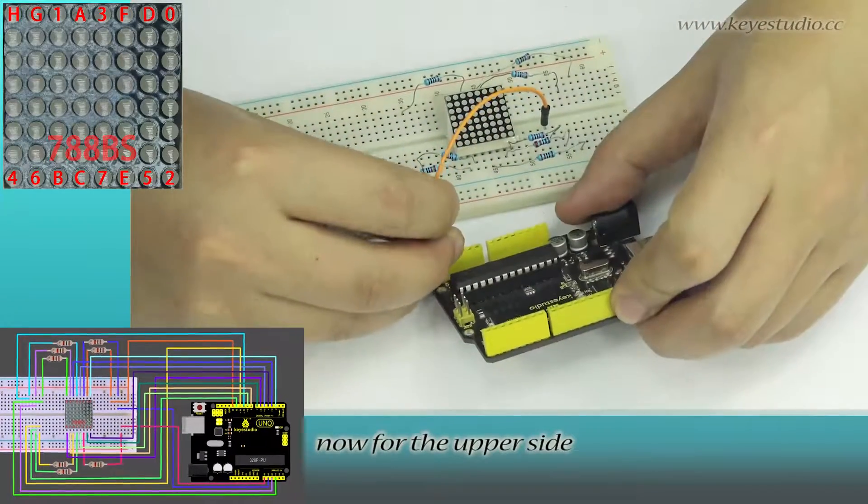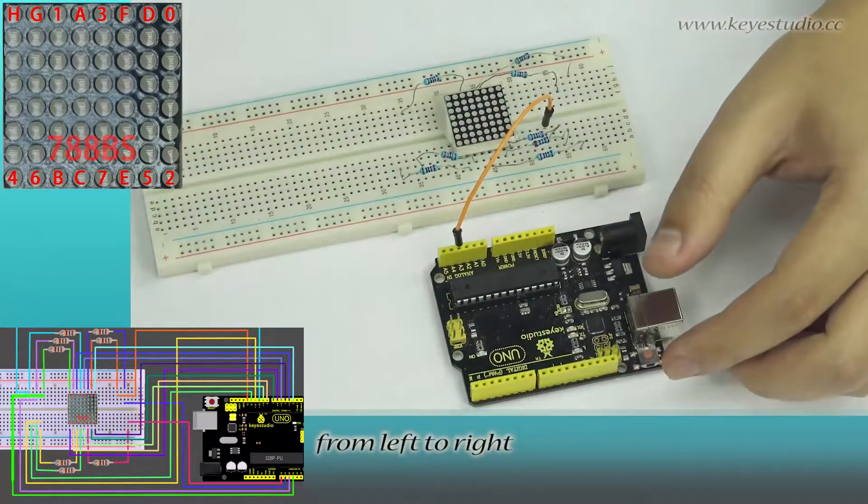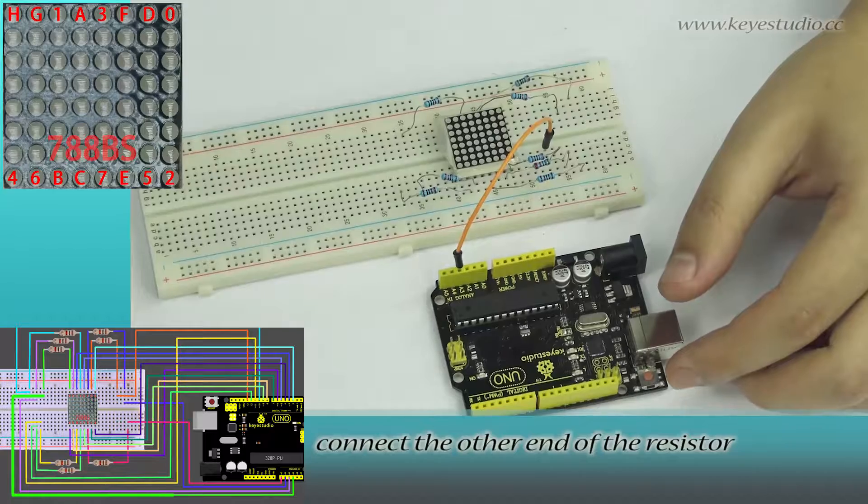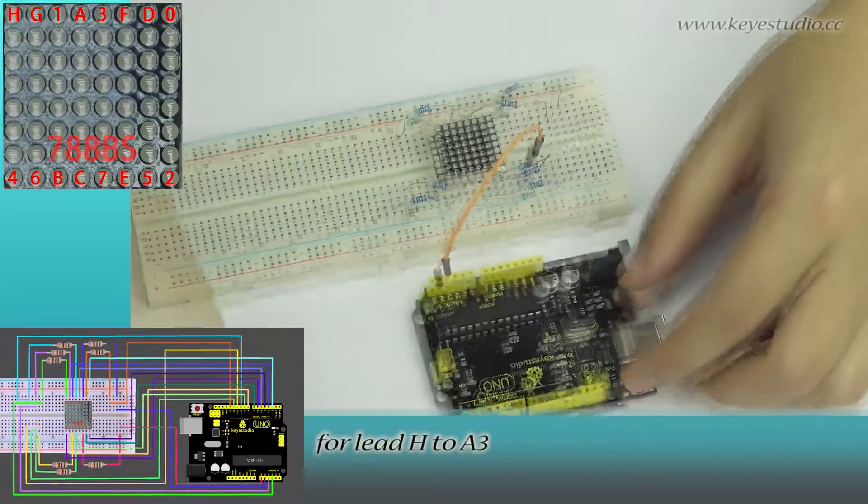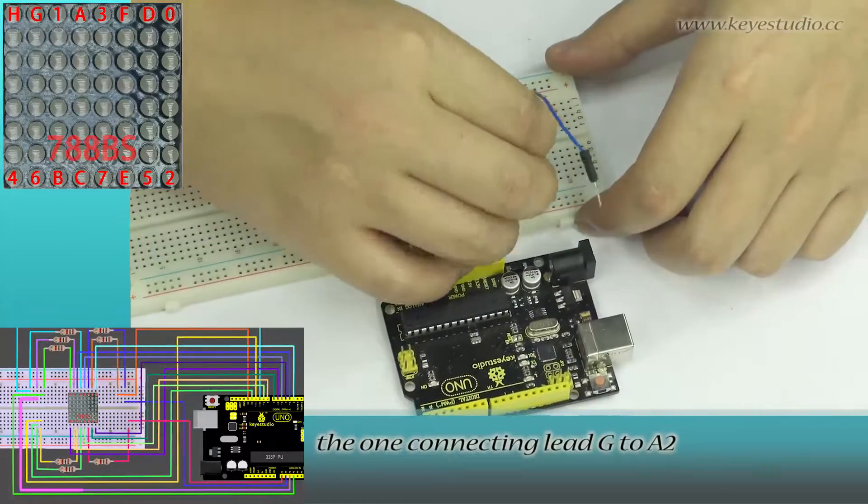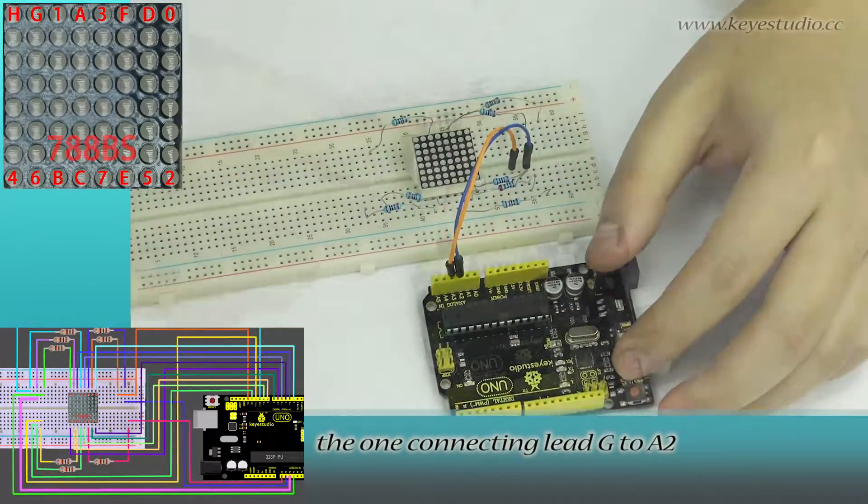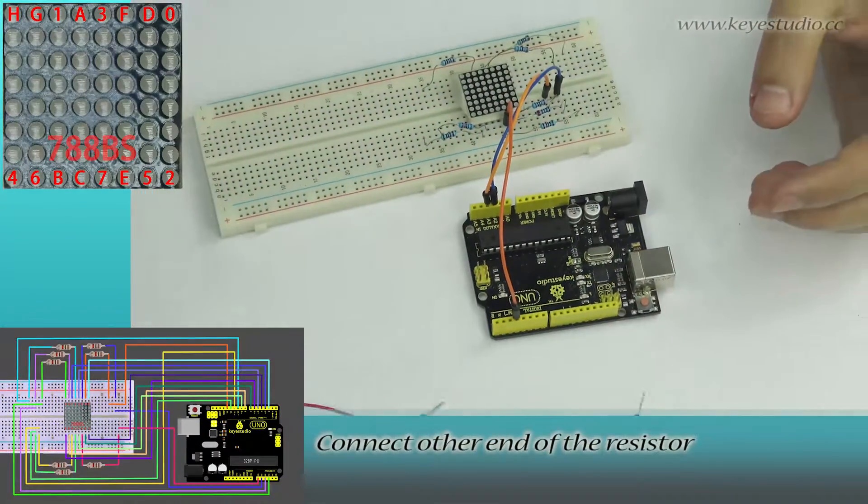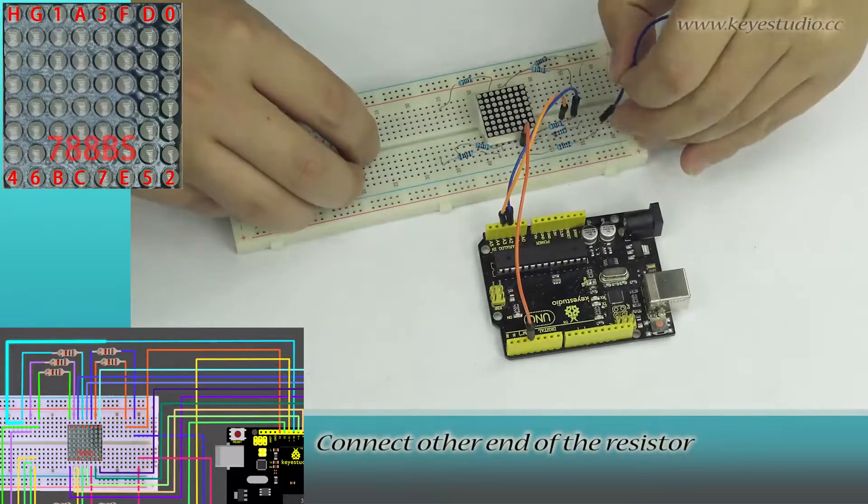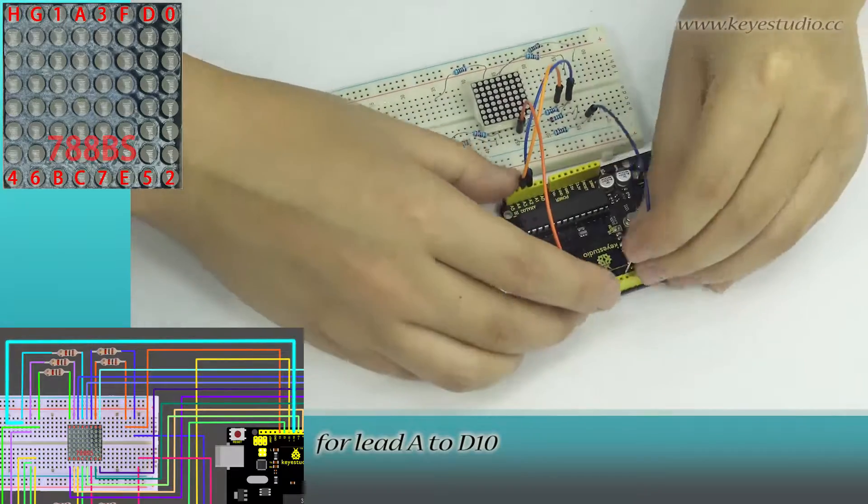Now, for the upper side from left to right, connect the other end of the resistor for lead H to A3, the one connecting lead G to A2, connect lead 1 to D3, connect the other end of the resistor for lead A to D10, connect lead 3 to D5.